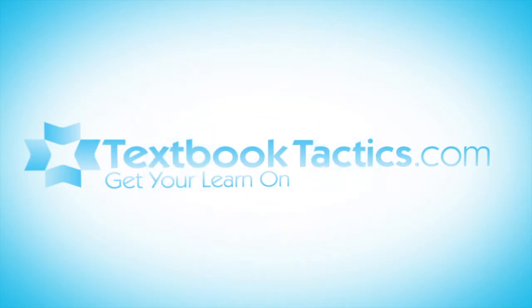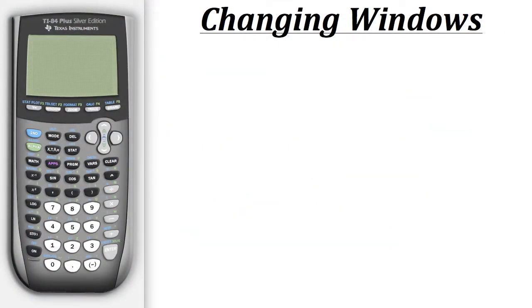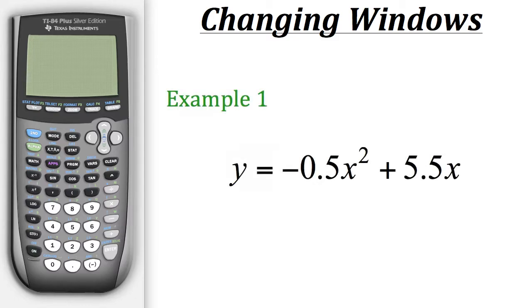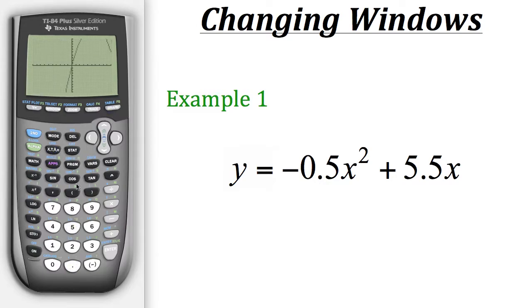This is a tutorial on changing windows to a graph on the calculator. For example one, we have the equation y equals negative 0.5 x squared plus 5.5 x. In order to change a window, we first need to enter this equation into y equals so we can see its graph. We'll put in negative 0.5 x squared plus 5.5 x and then graph it.